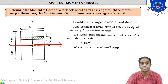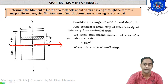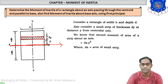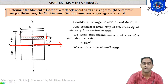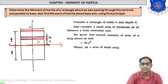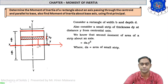Let us start with the figure. We are taking a rectangular elemental strip. The vertical height of the strip is dy, while the horizontal width of the strip is equal to the width of the rectangle, which is b. This strip is cut at a distance of y from the horizontal centroidal axis.